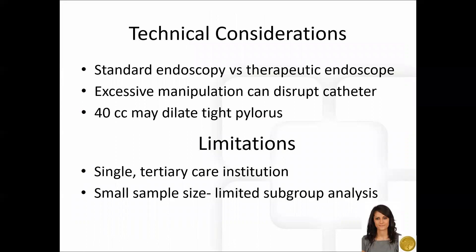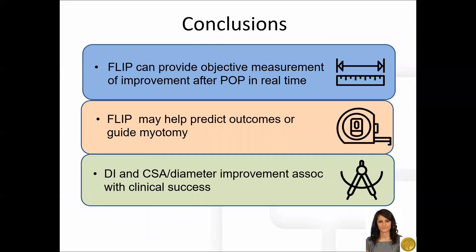The technical considerations and limitations to the study include a small sample size. Additionally, the catheter is thin and may be disrupted with over-manipulation. Also, although 40 cc was found to be appropriate for assessing the pylorus, it did appear to cause some dilation and trauma to the pylorus in patients with a tight pylorus due to their disease process. In conclusion, FLIP technology can provide objective measurement of improvement after POP procedure in real time. It may be employed to further predict outcomes or guide myotomies in patients. Additionally, the distensibility index and diameter improvement may be predictive of and correlated with symptomatic improvement and clinical success.